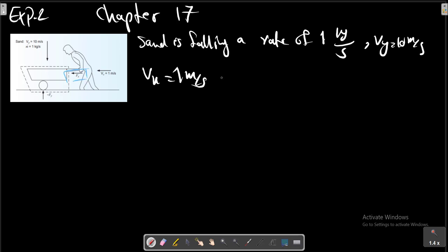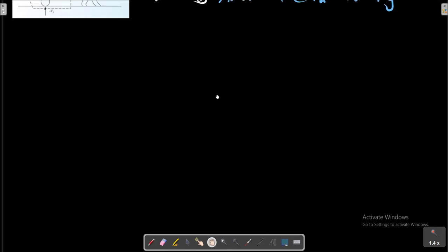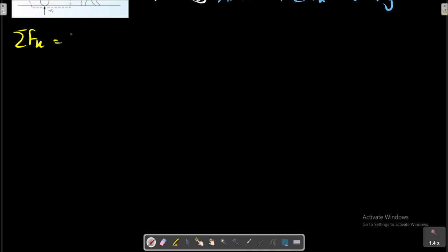Let's determine F_x and F_y. Consider a control surface around the wheelbarrow. Consider first the x direction. In the x direction we can write this relation.